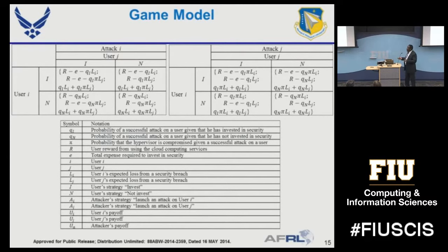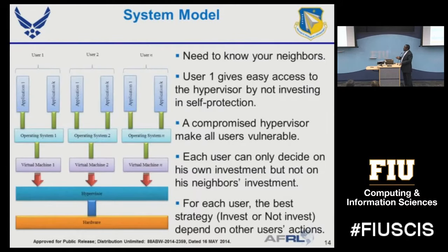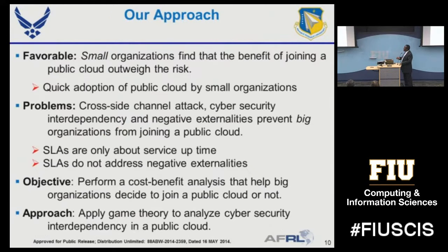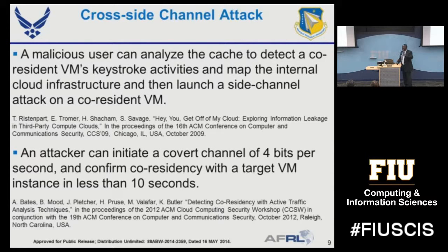Moving to the Nash equilibrium, we will see what the player behavior will be in each scenario. To know a specific user's payoff, you need to know their potential rewards from being in the cloud, the required expenses for security, the probability they can be compromised, and their potential losses. Having those parameters defines the payoff. Even if the payoff is not known, you can use a Bayesian game framework. The scenario and parameters fix the scope of the research, and results are based on those scenarios.